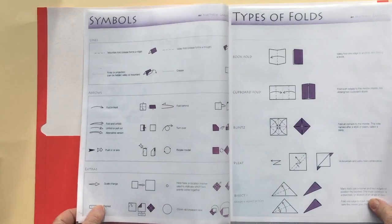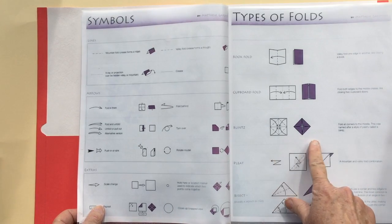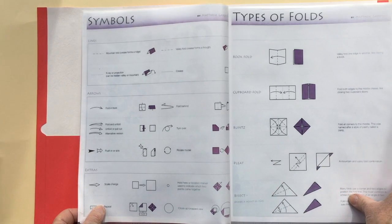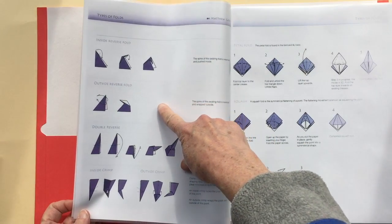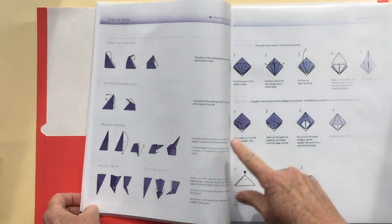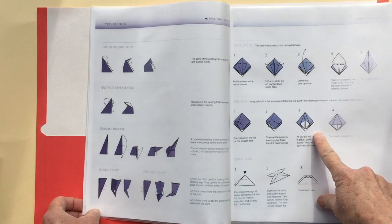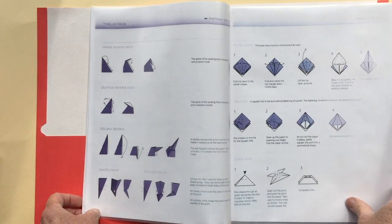The first few pages show you how to read the symbols and which different folds there are, how to turn things inside out, and how to make origami bases—the starting part for more complicated figures.